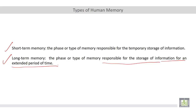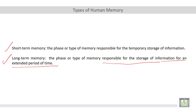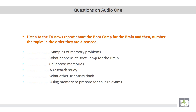Let's move to the first audio track, which deals with memories. You are required to listen to the TV news report about the bootcamp for the brain and then number the topics in the order they are discussed. There are six topics, and your role is to listen and number them in the order discussed.